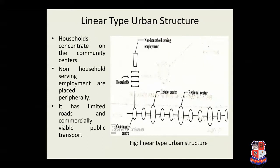The third one is linear type urban structure. In this figure, households concentrate on the community center. Non-household serving employment are placed peripherally. It is worked out by combining mass transport and pedestrian scale. It has limited road and commercially viable public transport. Hong Kong city is an example of the linear type of urban structure.